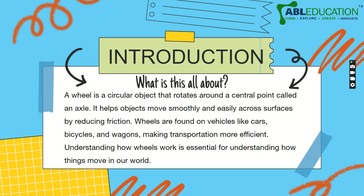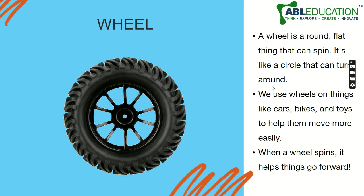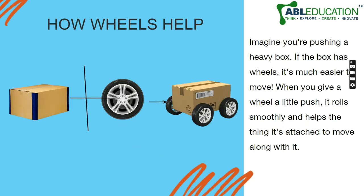So basically a wheel helps us go from one place to another easily. I'm sure you must have seen a real life picture of a wheel. A wheel is a round, flat thing that can spin — it's like a circle that can turn around.